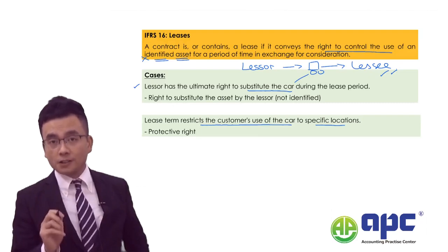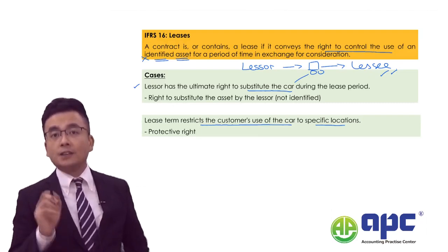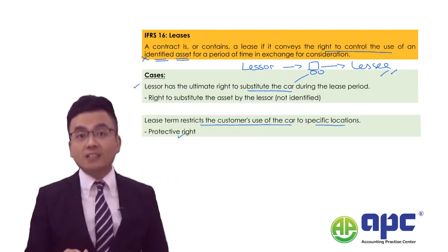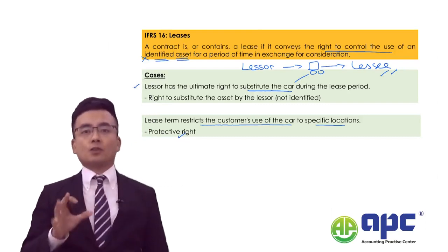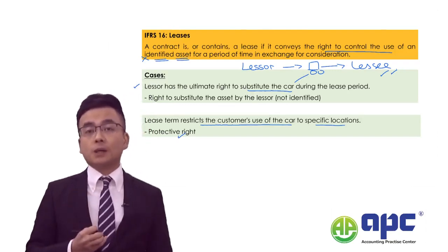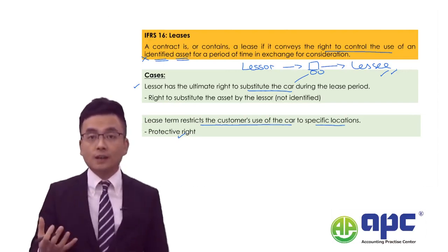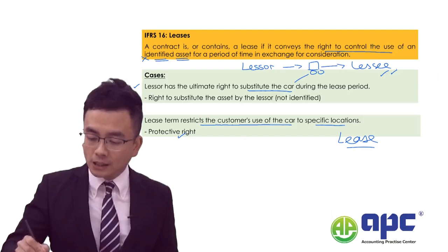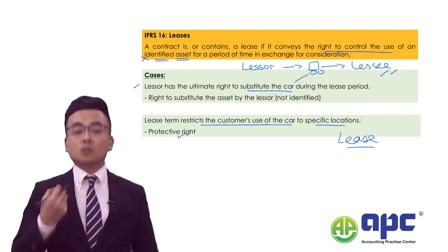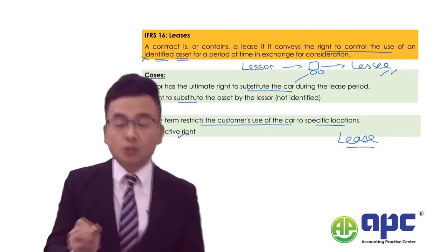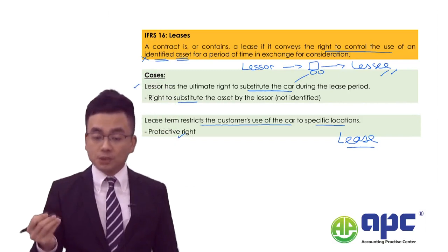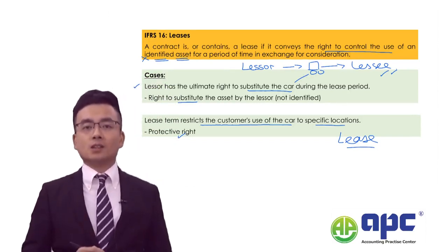This is covered by IFRS 16 as a special example of a protective right — it is to protect the lessor. The car cannot be used in certain areas as agreed in the contract in the first place. So I would say that this is still a lease, and the asset is still identified. The protective right is not the same as the substitute right.